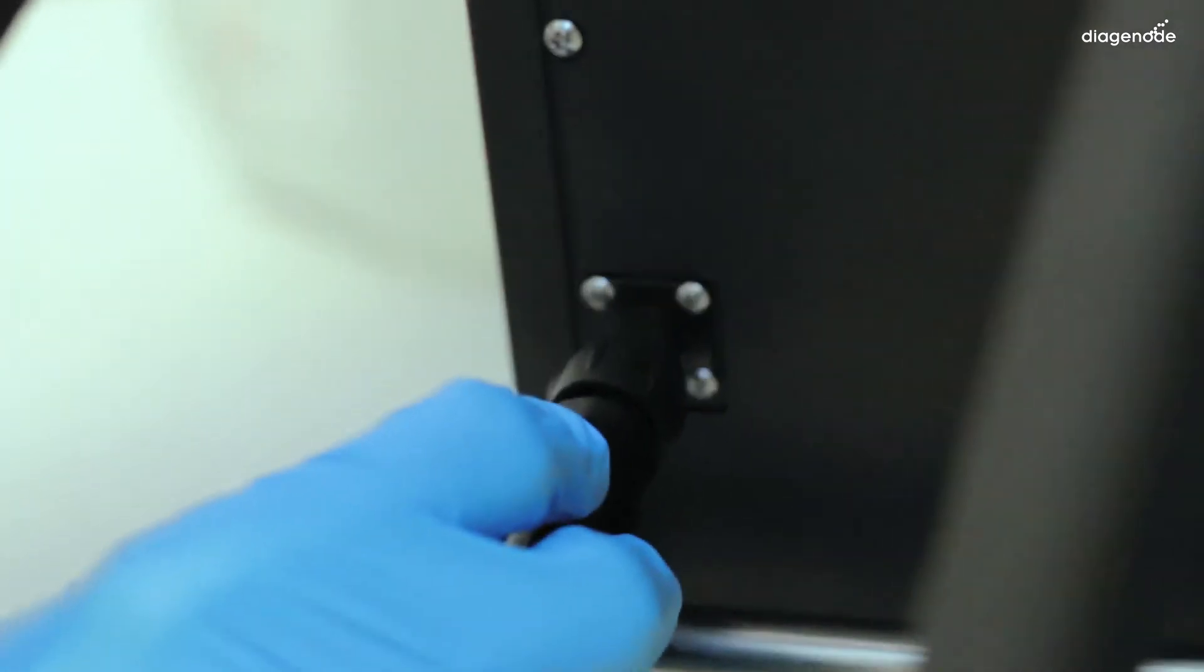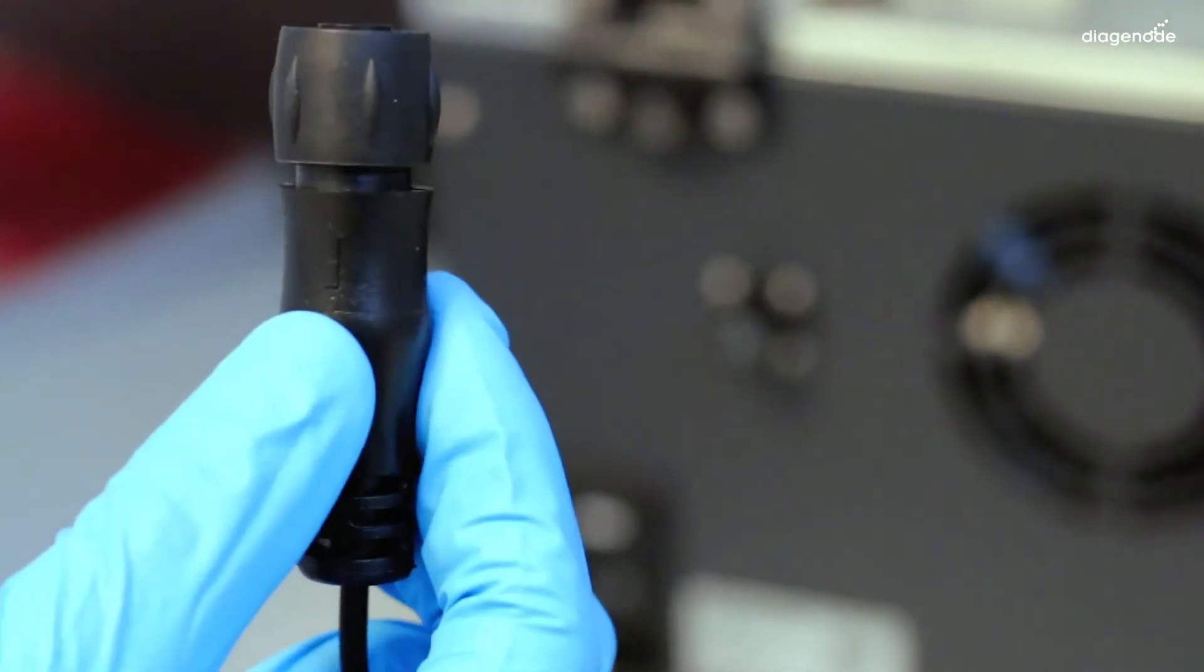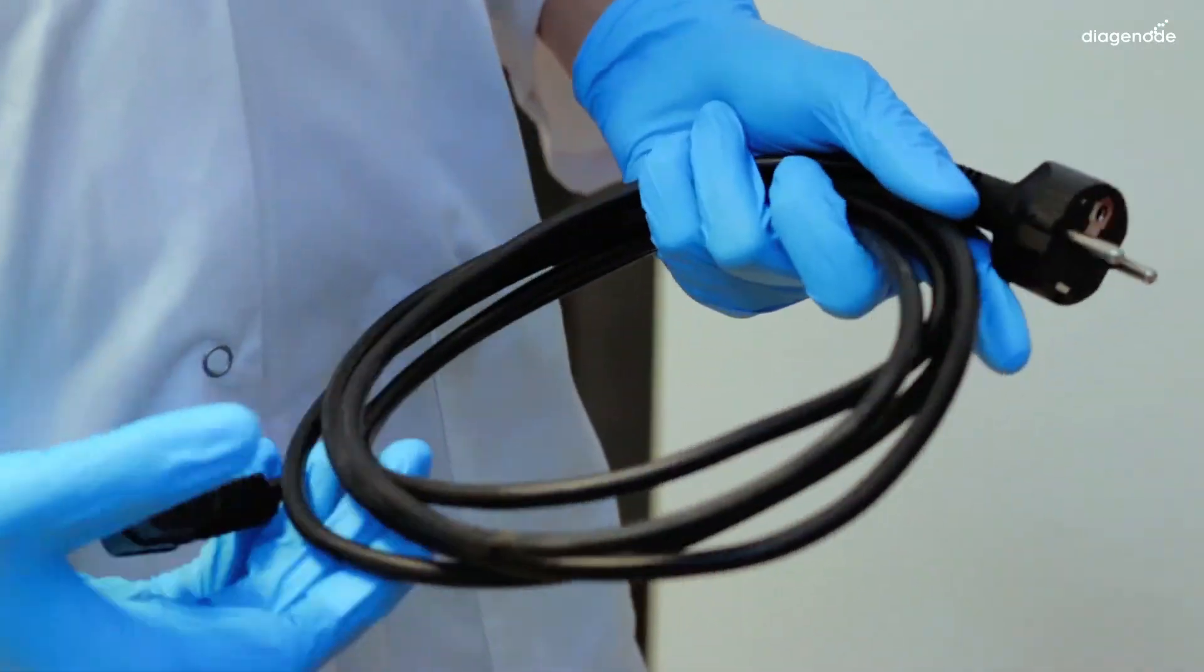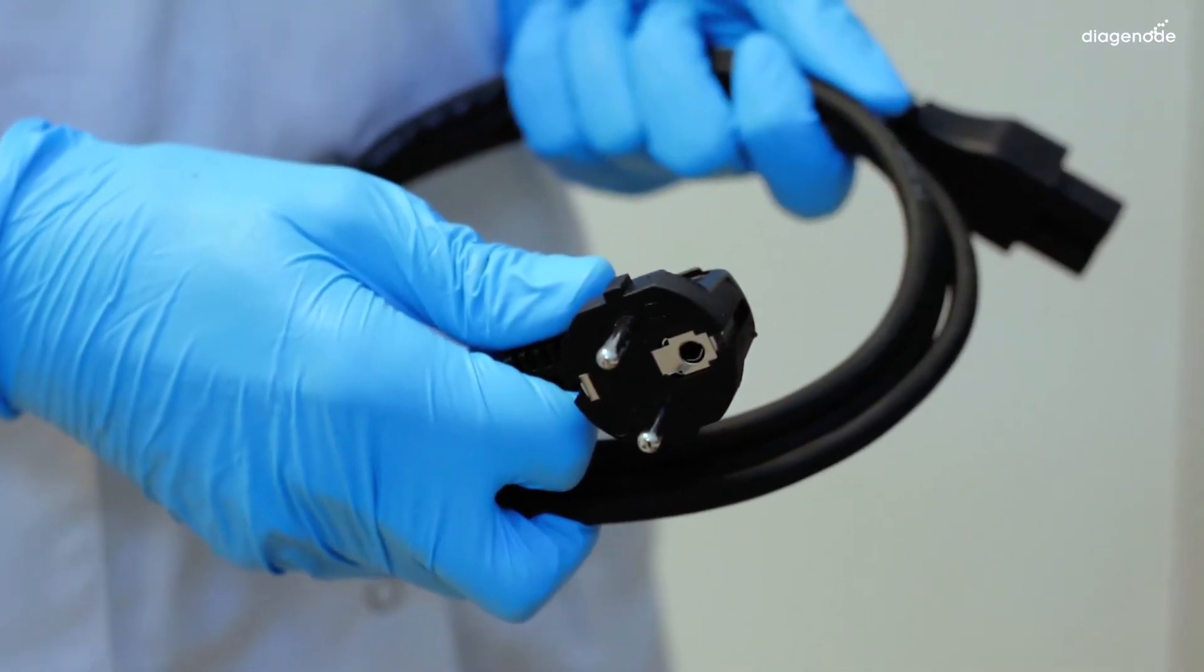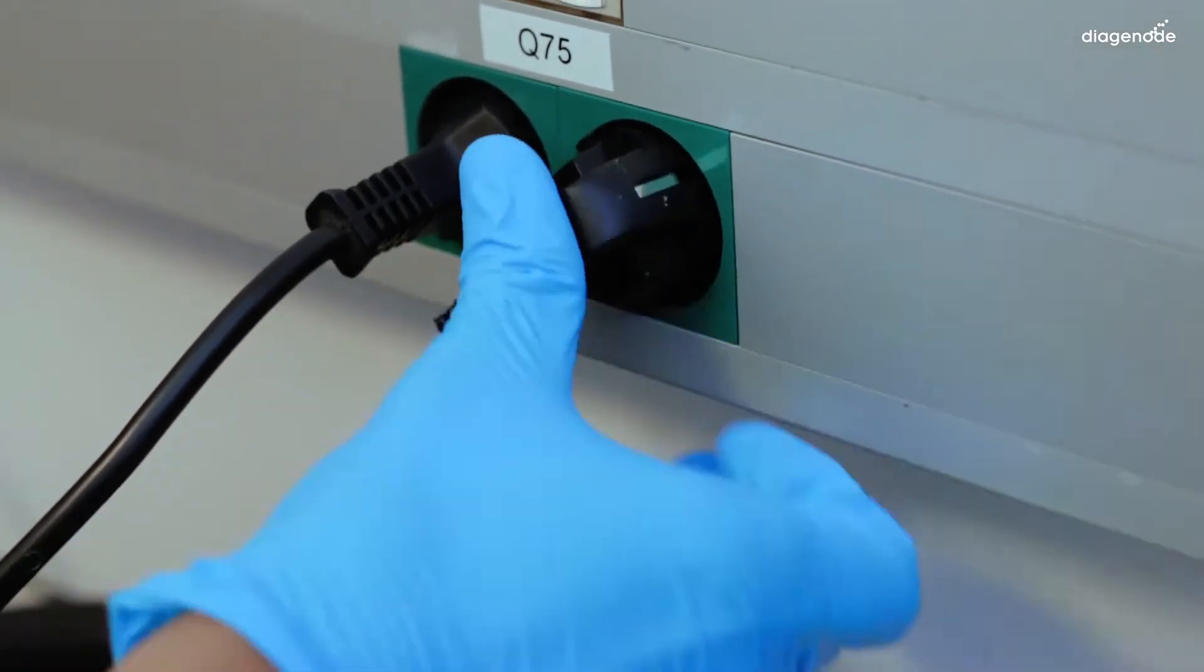Plug the valve connection cable on the back side of the BioRuptor cooler and on the back side of the BioRuptor Pico. And connect the sonicator with its own mains cable. Plug now the power cord into the outlet of the cooler and connect it to mains.